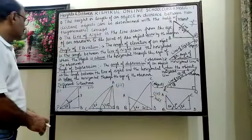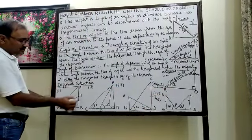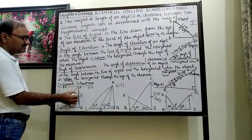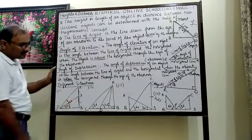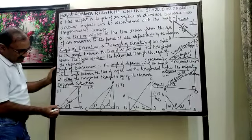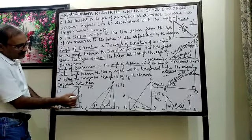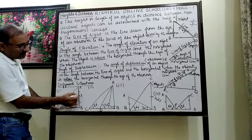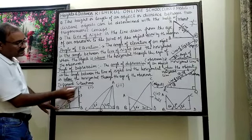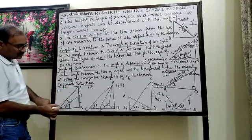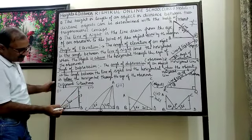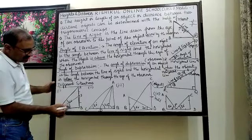Now consider a different situation: there is a building with a first floor and a second floor. The observer is at point C at some distance. He observes the first floor at point D — that angle is 30 degrees. At the same point, he observes the second floor, and that angle is 60 degrees.